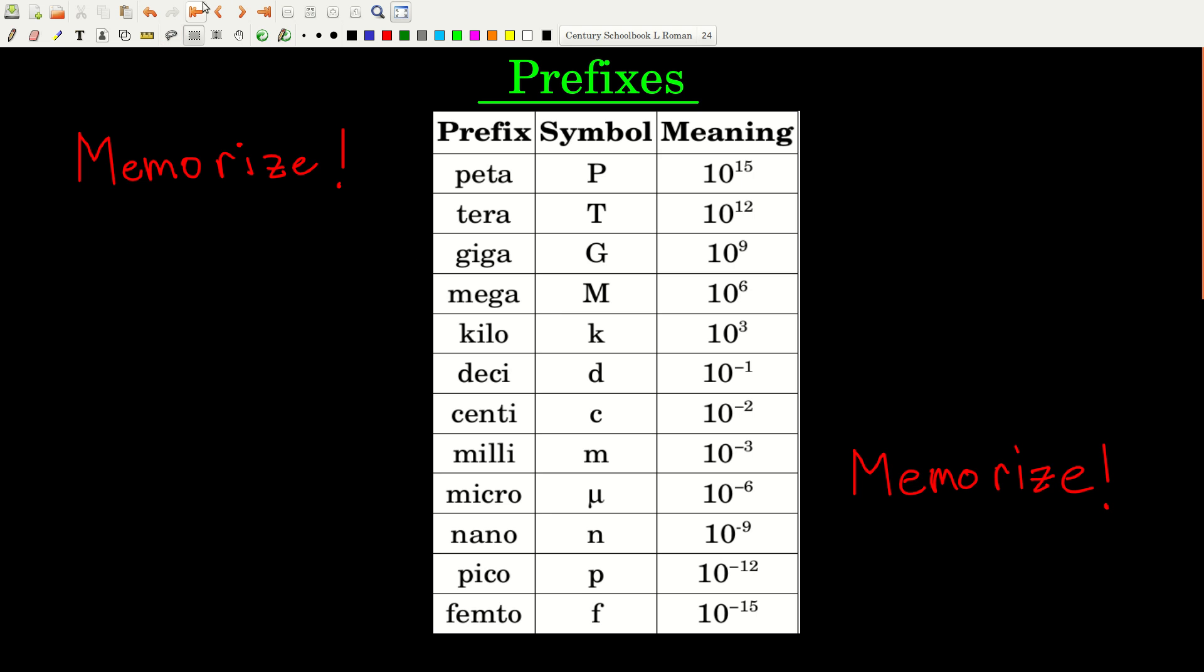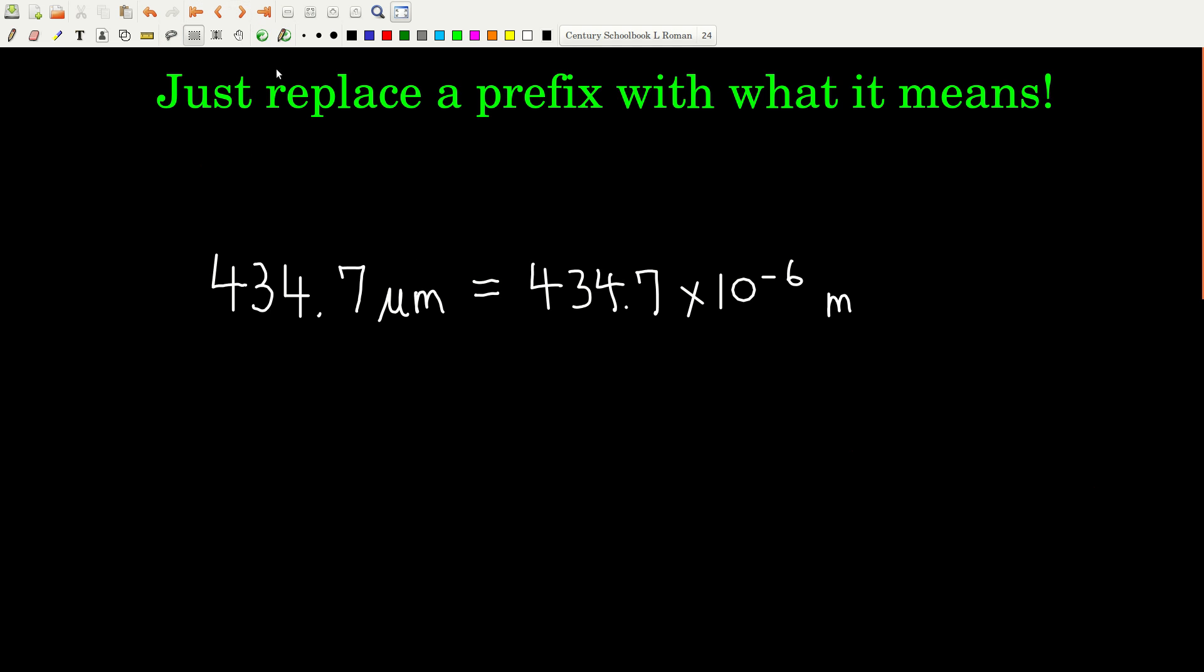Because one of the things that's going to be really nice about these prefixes is if we need to, what we can do is we can just replace a prefix with what it means. For example, if somebody took this measurement, and something was 434.7 micrometers, another way of writing this, an entirely equivalent way of writing this would be 434.7 times 10 to the minus 6th meters. You see what we did here is we just replaced the micro with what it means times 10 to the minus 6th. And these are equivalent. Don't have to worry about getting this improper scientific notation where it's just 1 to the left of the decimal and so on and so forth. This is a perfectly good way of writing this number, and you're going to find this very, very useful.